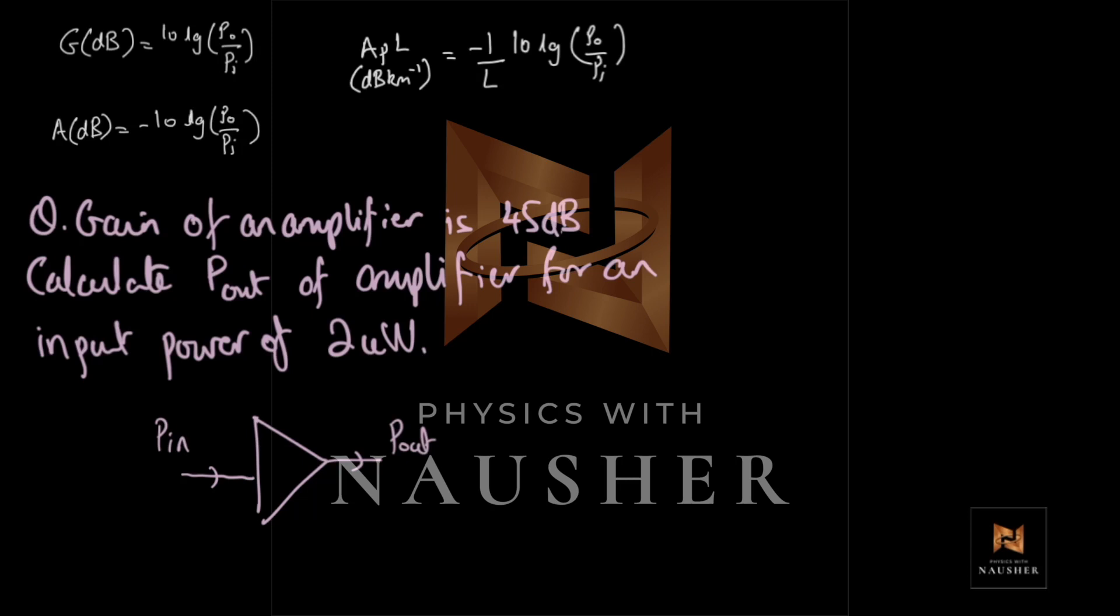Calculate. Now, the gain is given to you in decibels. So, the formula that you should be using is this one. So, let's use it. The gain in decibels is equal to 10 log P output over P input. The gain is 45. So, 45 equals 10 log P output over P input. So, this will give you 4.5 equals log P output over P input.